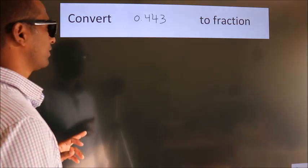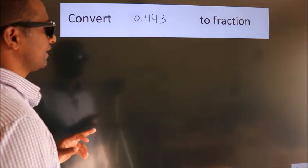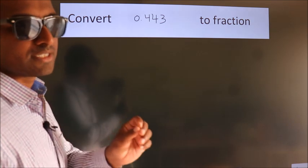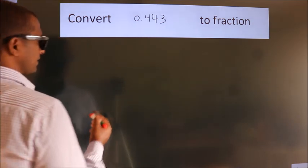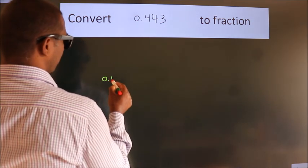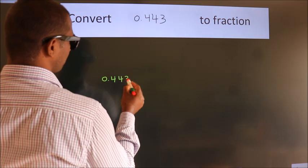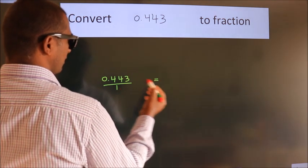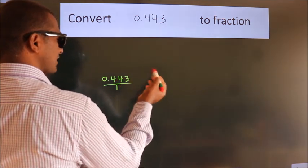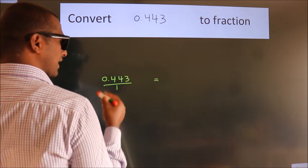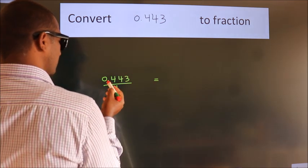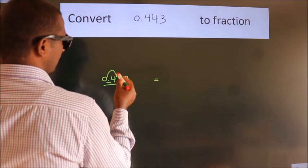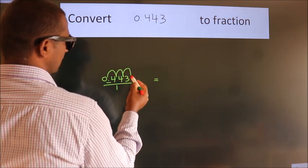Convert 0.443 to a fraction. Given is 0.443. To convert this to a fraction, we have to move this decimal after one, two, three numbers.